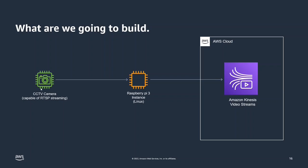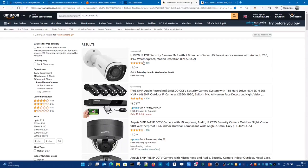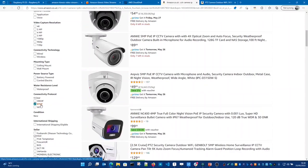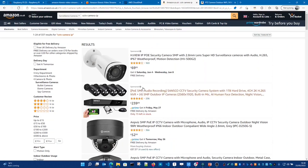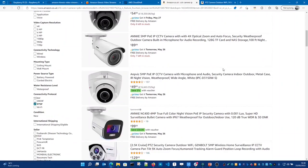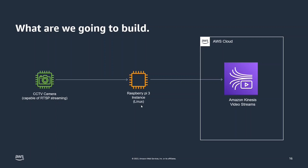We'll start with this simple diagram showing what we're going to build. First of all we have a CCTV camera or some camera existing on the local network — there are millions of these on the market. You can go on to somewhere like Amazon and you'll see that RTSP as a connectivity protocol is featured as one of the checkboxes, so you can find a camera that will support this protocol to connect to your device. The next part is the Raspberry Pi device, which we're going to use as a local gateway to connect to the local cameras and manage the stream up to Amazon Kinesis Video Streams.